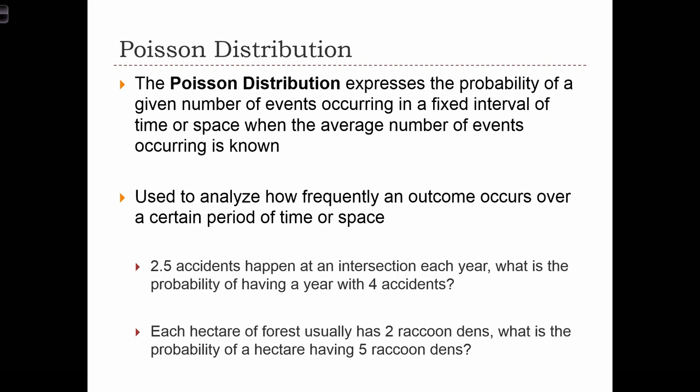So we can use this to analyze how frequently an outcome occurs over a certain period of time or space. For example, if we know that on average 2.5 accidents happen at a given intersection each year, we might want to know what is the probability of having a year with 4 accidents.